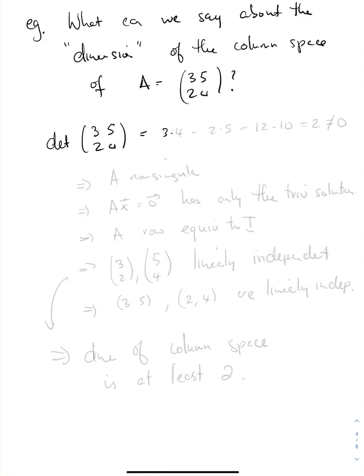Well, let's start with the determinant. This is going to be 3 by 4 minus 2 by 5, which is 12 minus 10, which is 2, which is certainly not zero. So we actually have a lot of information about this matrix. By the above theorem, we know that A is non-singular. We know that Ax is equal to zero vector has only the trivial solution. We know that A is row equivalent to I.